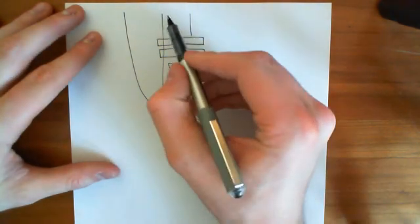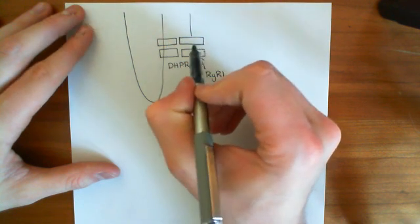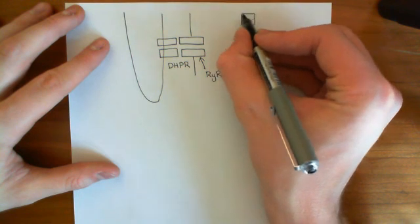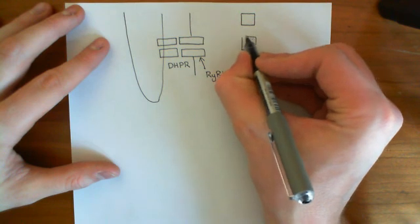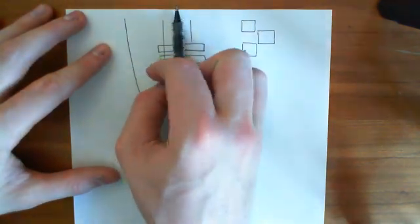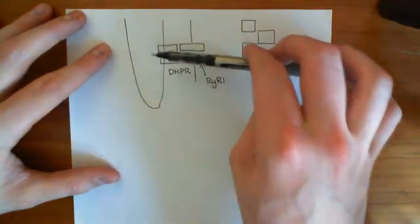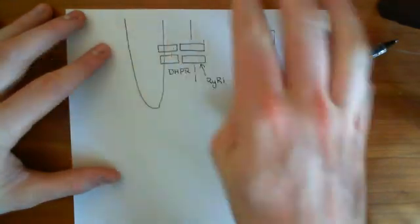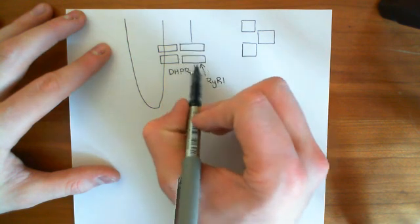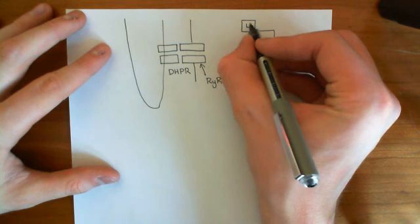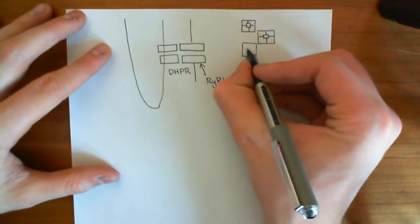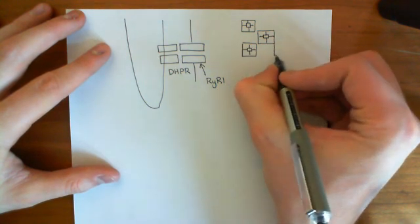If you look at how these dihydropyridine receptors and ryanodine receptors are located, you get a picture that looks something like this. If we imagine looking at the positions of the channels, the ryanodine receptors are denoted by these big squares. I'm basically looking down on a plane between the surface of the T-tubule membrane and the surface of the endoplasmic reticulum membrane, and just looking at the positions of these ryanodine receptors. Here is basically a ryanodine receptor consisting of these four massive subunits, and here is another one. They basically form these massive lattices on the surface of the sarcoplasmic reticulum membrane.